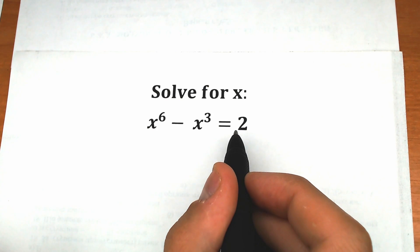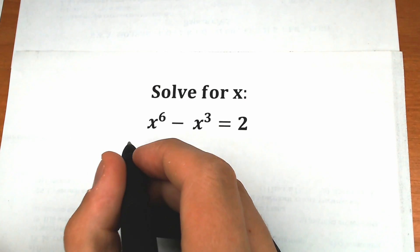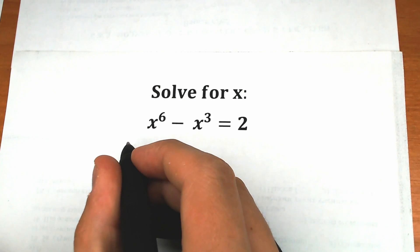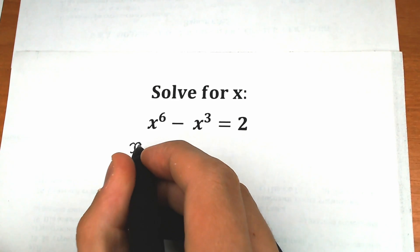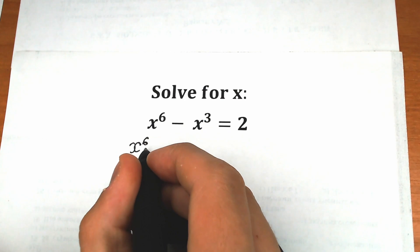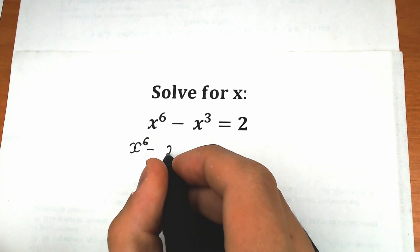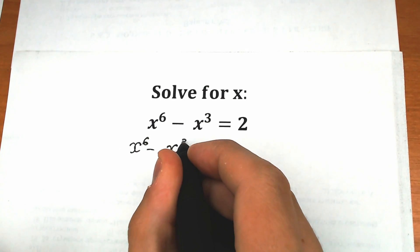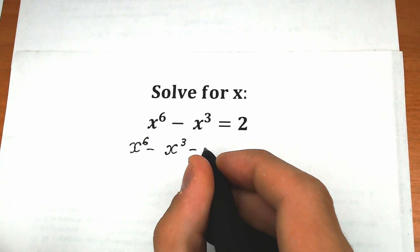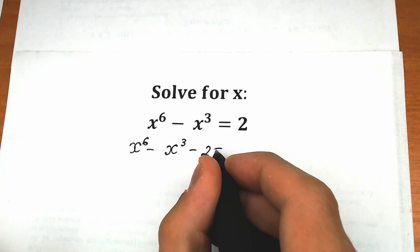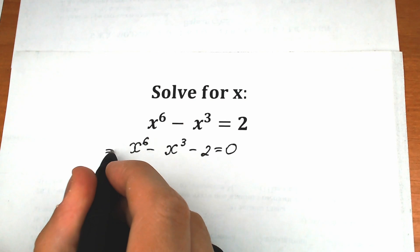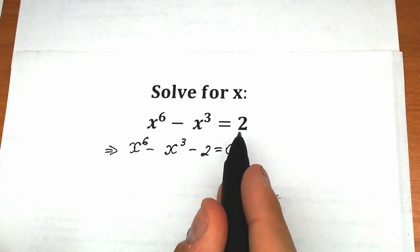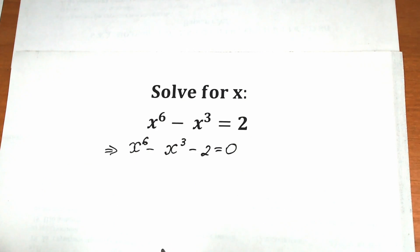First of all, let's bring this 2 from the right side to the left side. So what we have right here is x to the 6th power minus x cubed minus 2 equals 0. We just moved the 2 from the right side to the left side.